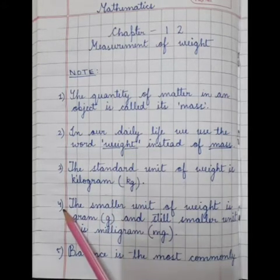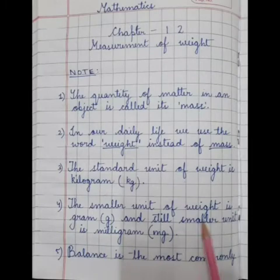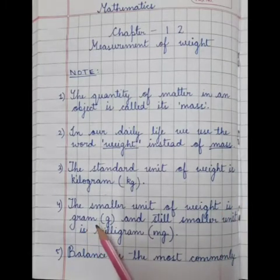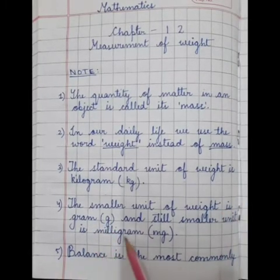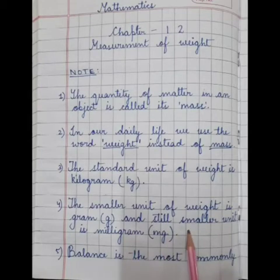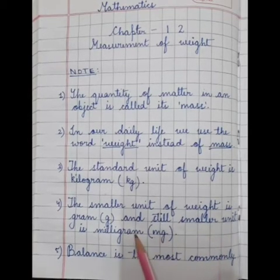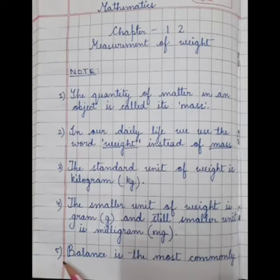Number 4: The smaller unit of weight is gram. In short, we write g for gram. And still smaller unit is milligram. We write mg for milligram.